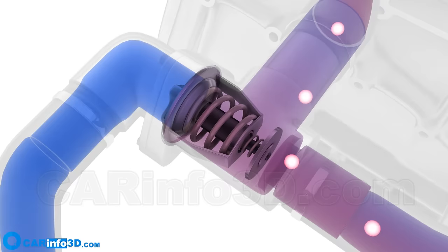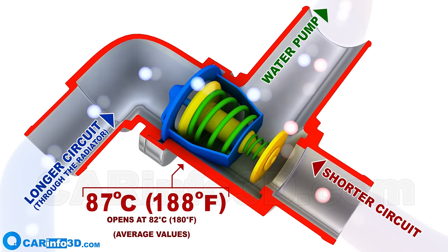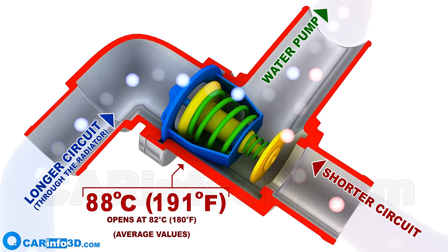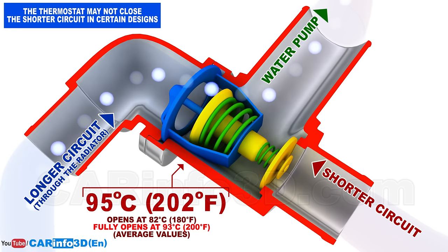When the temperature hits 82 degrees centigrade, the thermostat valve gradually opens and the hot liquid mixes with the radiator-cooled liquid from the longer circuit, which ensures that the temperature is balanced. If such mixing is insufficient and the temperature continues to increase, at 93 degrees centigrade the thermostat will shut off the shorter circuit and fully open the longer circuit, allowing the entire volume of coolant to circulate through the radiator.